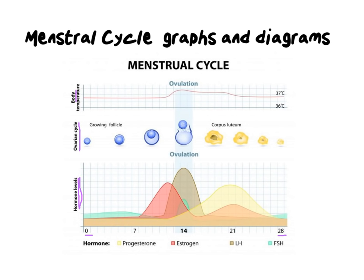For example, if we draw a line over the first seven days, you'll notice the follicle is growing because of FSH. Looking at the hormone graph, you can see that follicle-stimulating hormone — FSH, shown in green — is starting to rise slightly, because we need to stimulate the follicle to grow. Luteinizing hormone, shown in orange, is sitting in the background and also slowly starting to increase, though it's fairly consistent at this point.